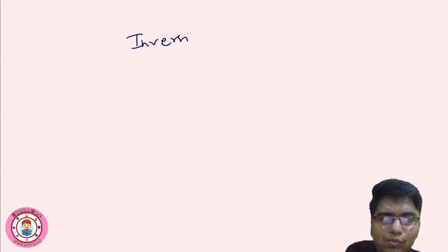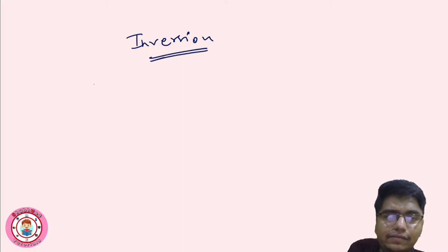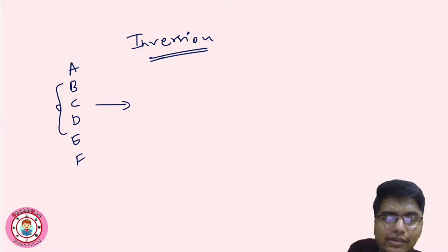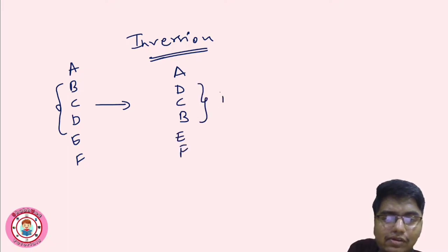From the name itself, you can understand that a chromosome segment is inverted. Suppose we have a sequence: A B C D E F. If we take segment B C D, in inversion it becomes A D C B E F. So this is known as inversion.